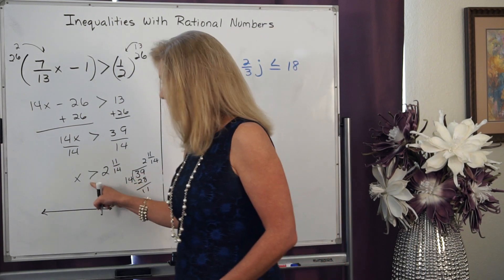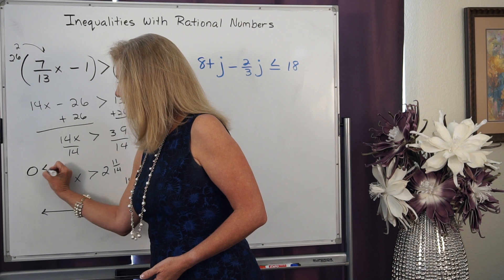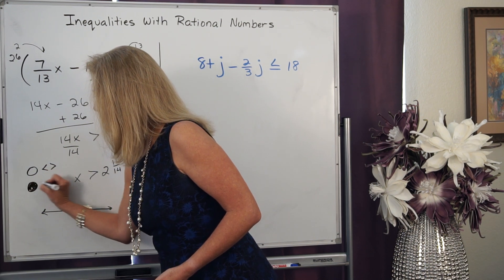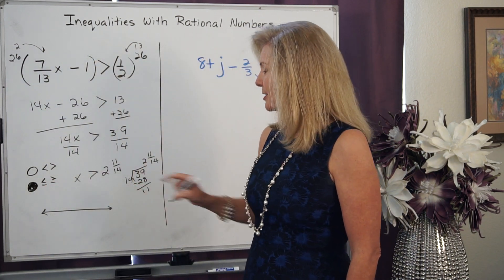So remember, when we go to graph it, you use an open circle if it's less than or greater than, and you use a closed circle if it's less than or equal to or greater than or equal to.